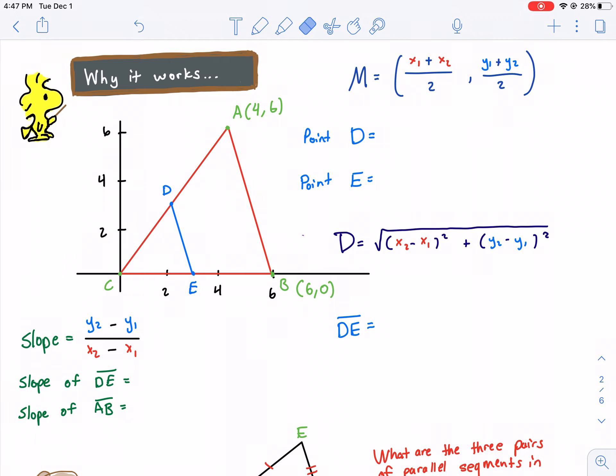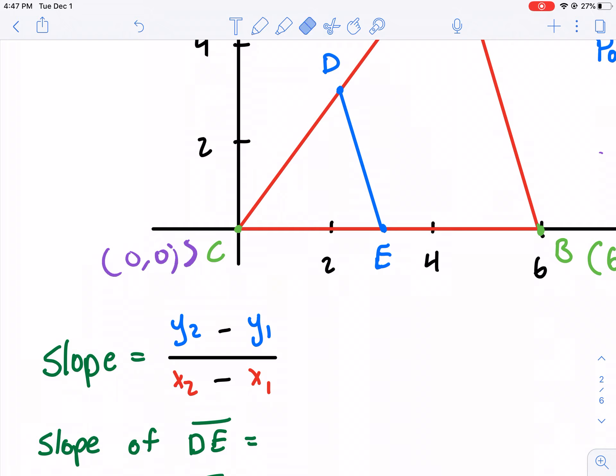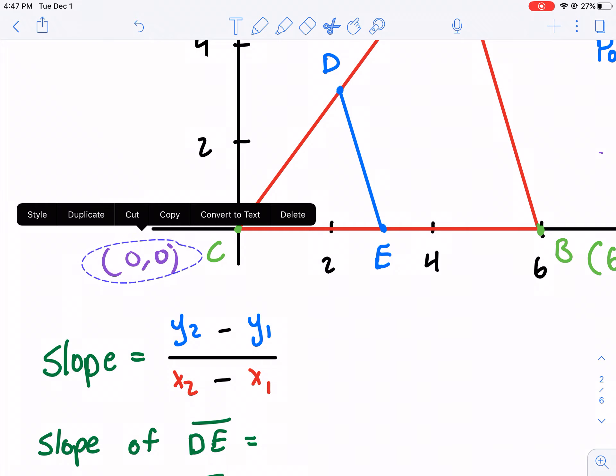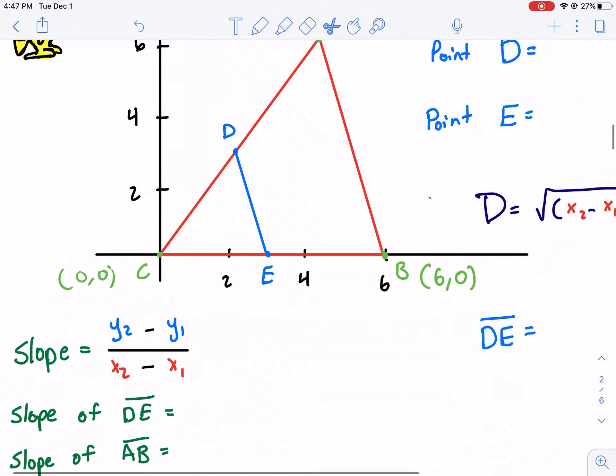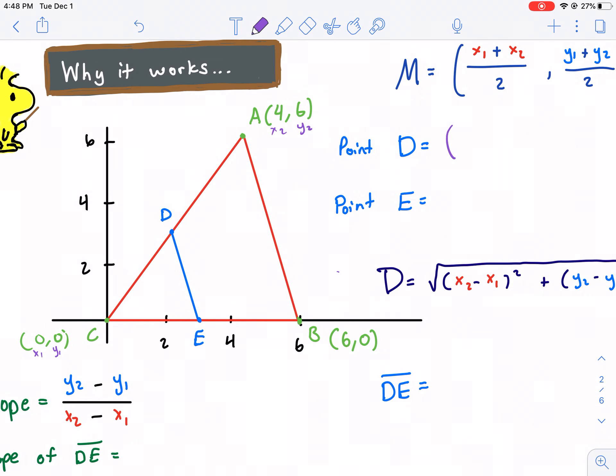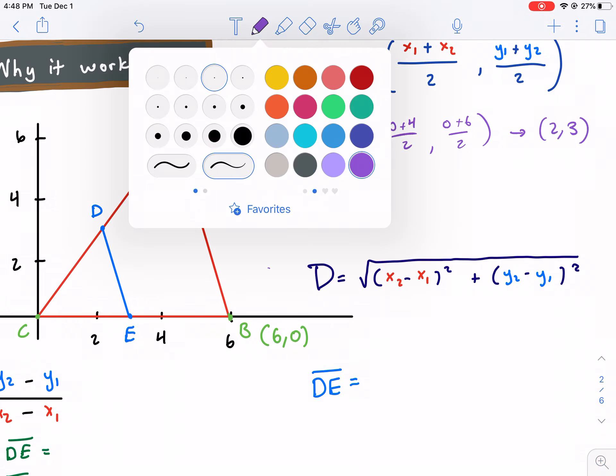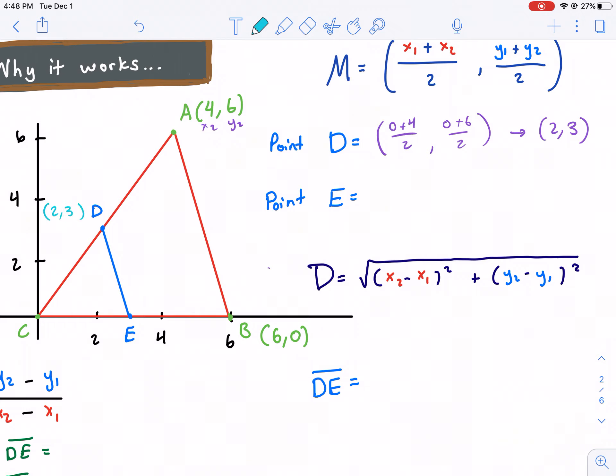So let's start here. First off, using the midpoint formula, remember how we said D and E are the midpoints? How do we find the location of point D? Well, we know C is 0, 0. So we can easily find point D by doing x1 plus x2, so that's 0 plus 4, divided by 2, comma, y1 plus y2, so that's 0 plus 6 divided by 2. If we simplify this, we get 2, 3. So we have point D at 2 comma 3. So we have our first midpoint, D.